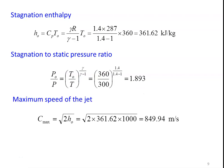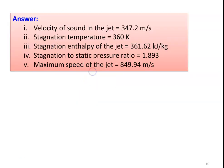Answers for Example 4: Velocity of sound in the jet = 347 m/s. Stagnation temperature = 360 K. Stagnation enthalpy = 361.62 kJ/kg. Stagnation to static pressure ratio = 1.893. Maximum speed of the jet = 849.94 m/s.